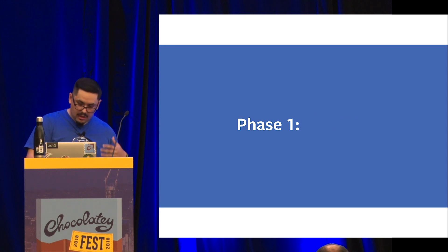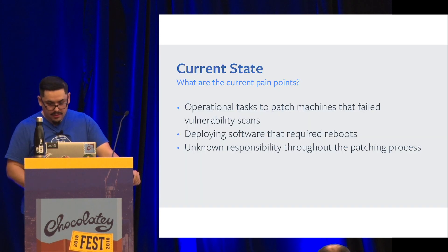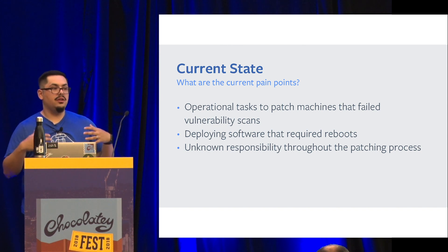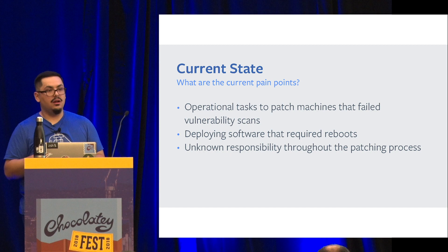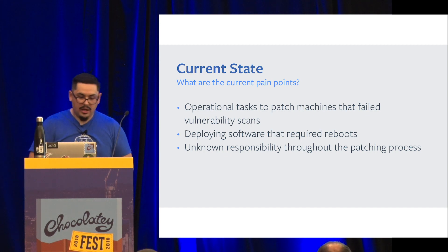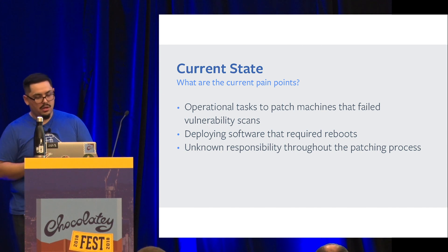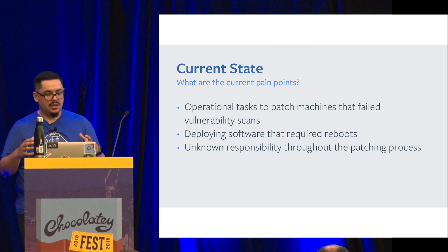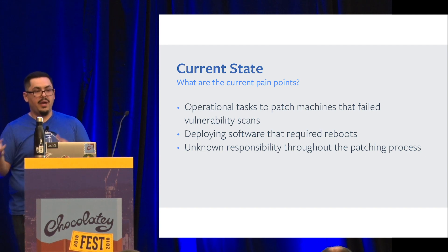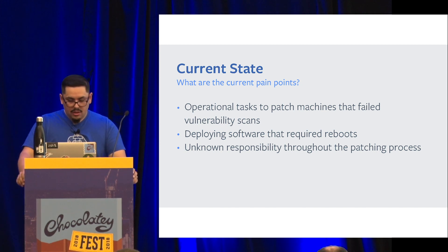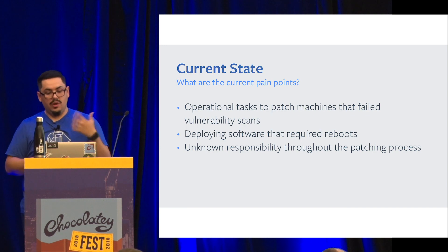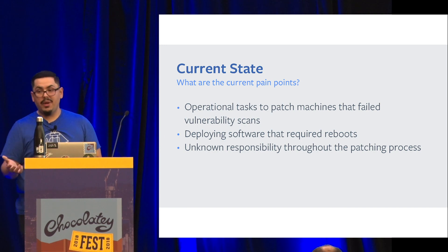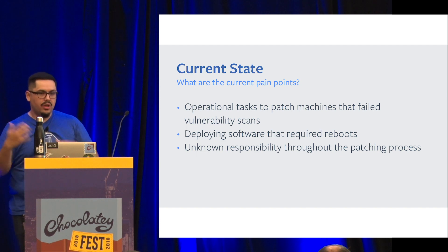So phase one: planning. The first part of planning is understanding the current state of our fleet and our operational goals. What we found is we had a lot of manual boring work. The ownership of patching was pretty nebulous — we had a vulnerability management team, we had my team managing the base OS, but then we also had the owners. Who was responsible for patching? If I install a patch and reboot your machine, you might not want that. Do the end users own patching? Should they care about patching? Is that something you want your end users to have to think about? No.